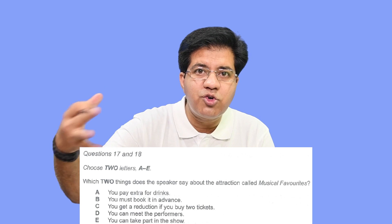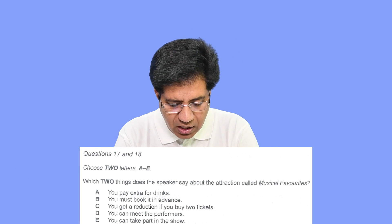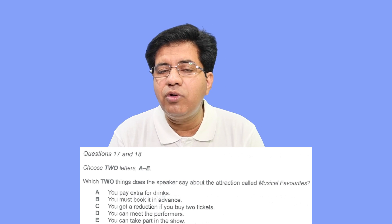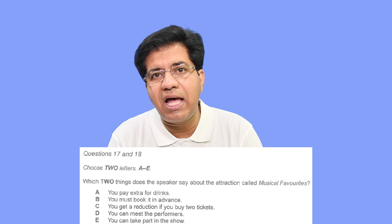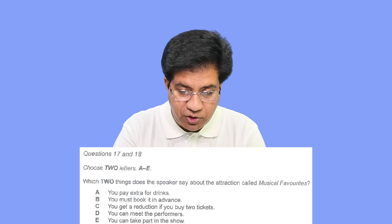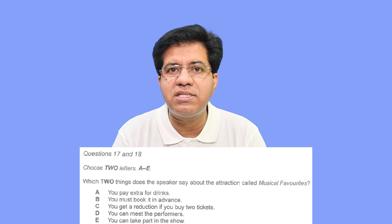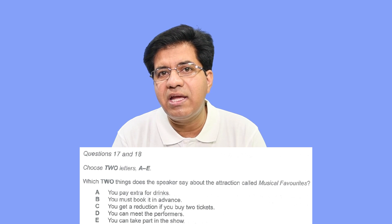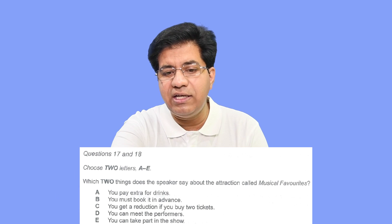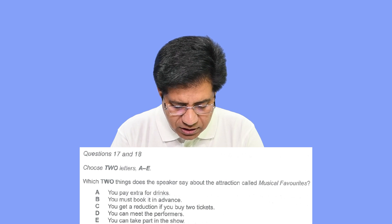Option C: 'you get a reduction if you buy two tickets.' If they talk about two tickets — 10% discount, 20% discount, 15% discount if you buy two tickets — then this option is right. If they say the price is the same whether you buy one ticket or ten, or they don't mention any discount for two tickets, then this is not the right option.